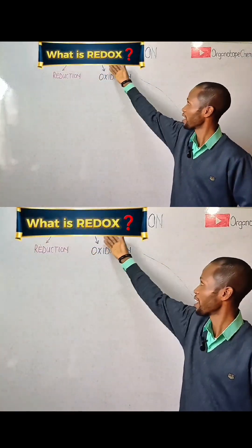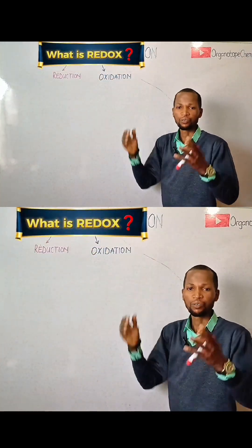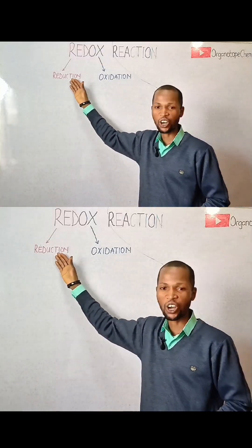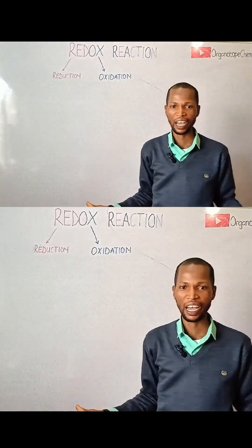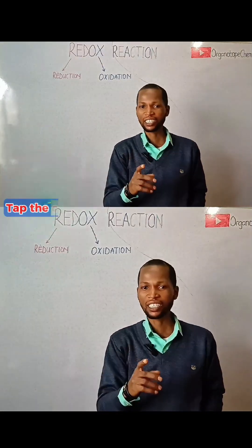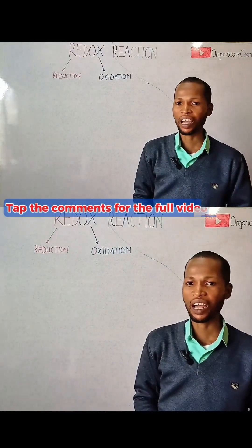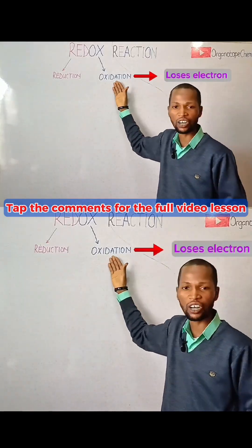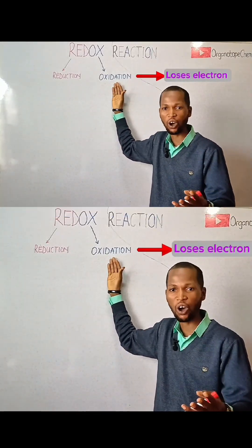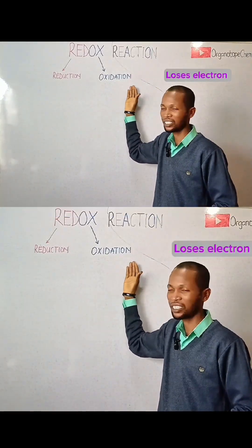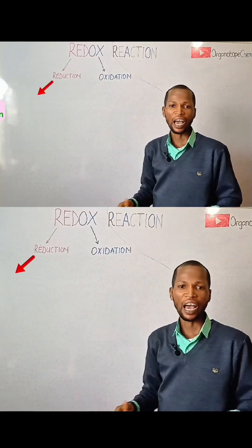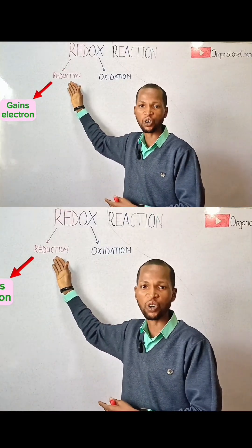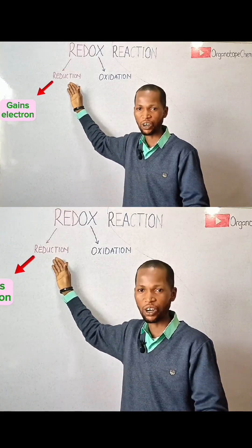What is a Redox Reaction? Redox reaction simply means reduction, oxidation, reaction. It is a type of chemical reaction where one substance loses electrons in the process called oxidation, and the other substance gains electrons in the process called reduction.